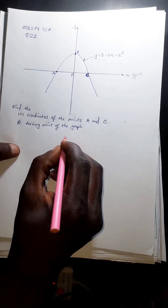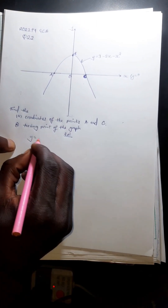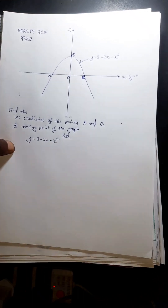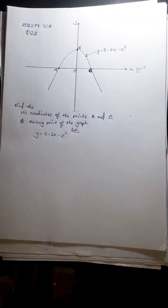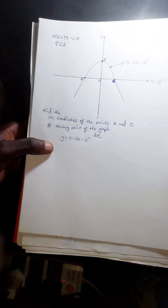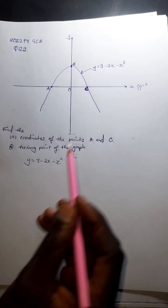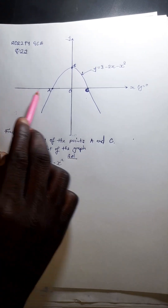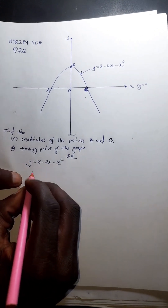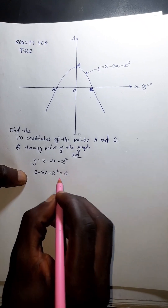We rewrite the function: y = 3 − 2x − x². Since we're finding the values of x on the x-axis, we substitute y = 0. So the equation becomes: 3 − 2x − x² = 0, because y equals zero on the x-axis.